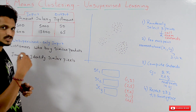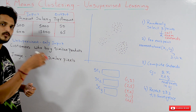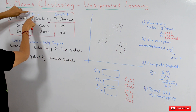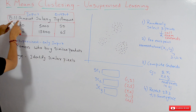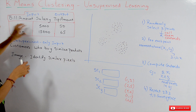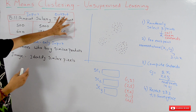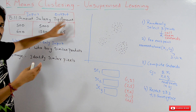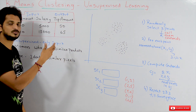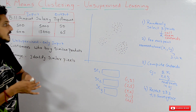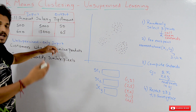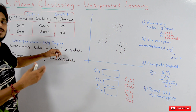In our previous classes, when we discussed about different supervised machine learning models, the dataset had both input and output. For example, bill amount and salary were the inputs, and tip amount was the output. Based on this output, we define different loss functions and try to minimize the loss. The output supervises us in identifying the minimum loss, which is why we call them supervised machine learning models.